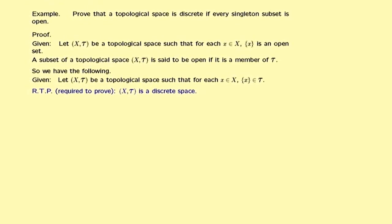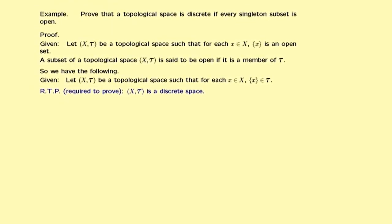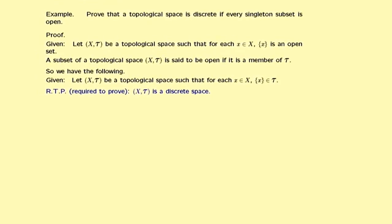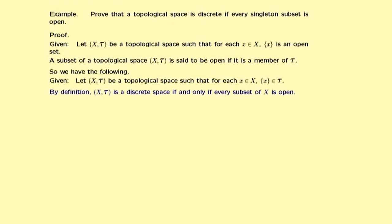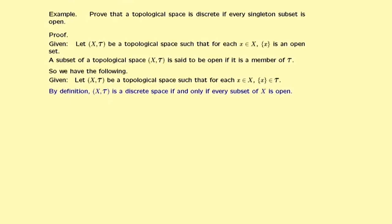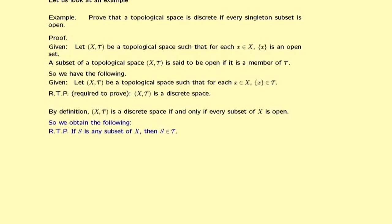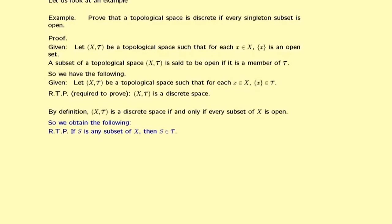Step 3 — what are we required to prove? We are required to prove, or RTP, that (X, τ) is a discrete space. Step 4 is to write the definition of each technical term in what we are required to prove. By definition, (X, τ) is a discrete space if and only if every subset of X is open. So we can rewrite what we are required to prove: RTP — if S is any subset of X, then S belongs to τ.